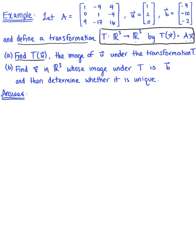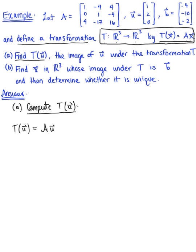So here we go, part A. We are asked to compute T of vector U — the image of vector U under the action of T. To compute this transformation we'll use matrix multiplication. By definition, the image of vector U under T is matrix A times vector U. So let's plug in our 3 by 3 matrix A: the first column is 1, 0, 4; the second column is negative 4, 1, negative 17.